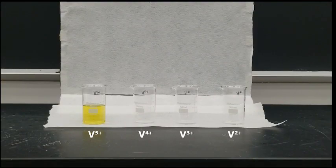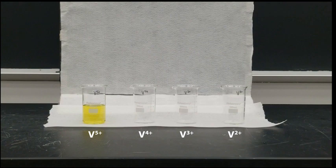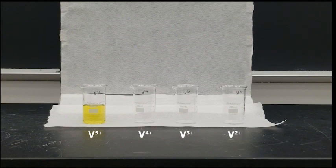Many transition metals have multiple oxidation states. Different oxidation states are often very different colors. Today we are using a zinc mercury amalgam to reduce vanadium from its plus five oxidation state to plus two and look at the different colors associated with each.